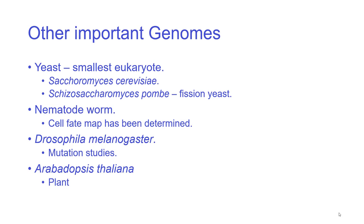Drosophila melanogaster, the fruit fly, has been studied for a long time because of mutation studies — it's a very easy organism to mutate. Arabidopsis thaliana is the basic plant genome. We now have many other plant genomes such as rice and wheat, which allow us to look at what is happening in crop species. These crop plants have lots of genome duplications — instead of being diploid with two copies of each chromosome, they can be hexaploid or higher. This explains how different ancestral grasses combined to create our food crops and why they have such large seeds used to make bread.